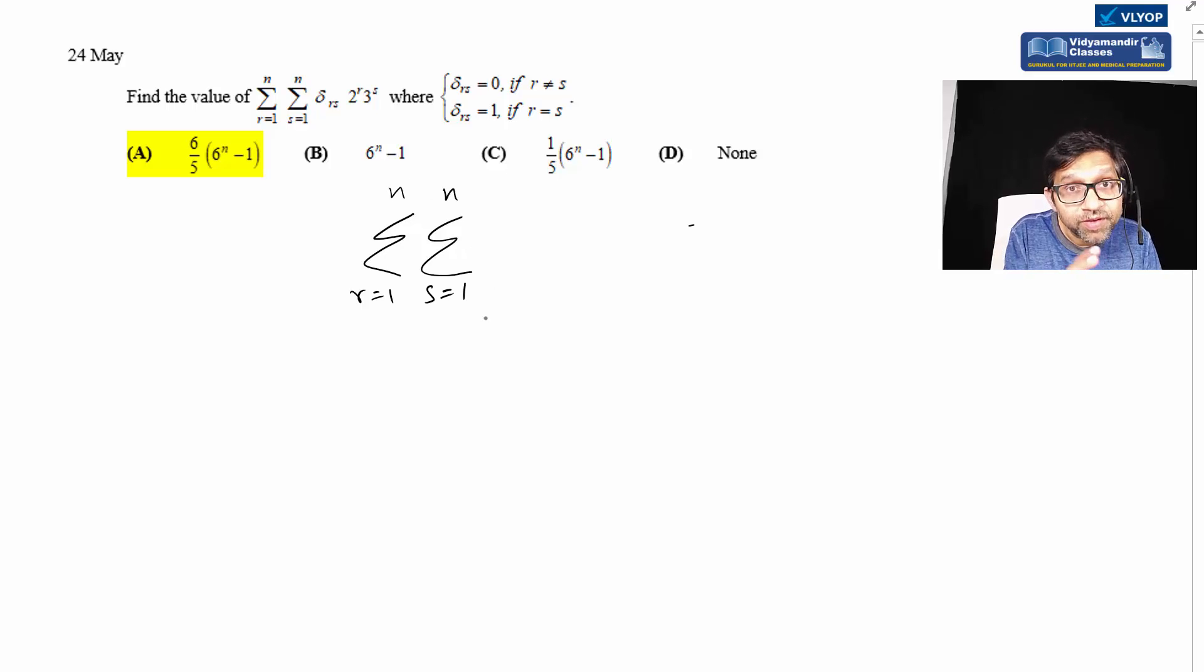For every value of r, we need to take all values of s independently. When r equals one, s covers one to n. When r equals two, again s covers one to n. They are independent.